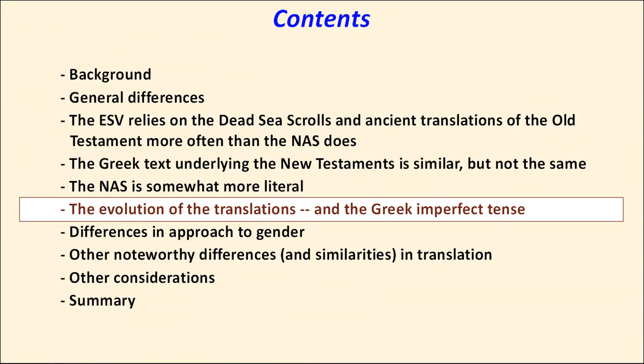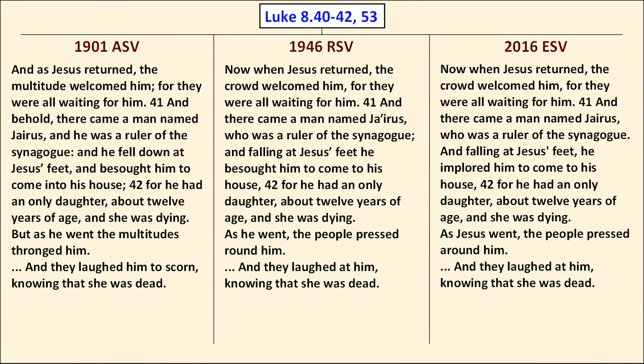In the next section, we'll examine the development of each translation starting from the ASV, their most recent common ancestor, and spend time discussing the translation of the Greek imperfect tense. We'll begin with the development of the ESV, looking at Luke 8:40-42 and verse 53 in three translations: the 1901 American Standard Version, the 1946 Revised Standard Version, and the 2016 ESV. I chose the 1946 RSV as the intermediate point because more changes were introduced between 1901 and 1946 than afterward.